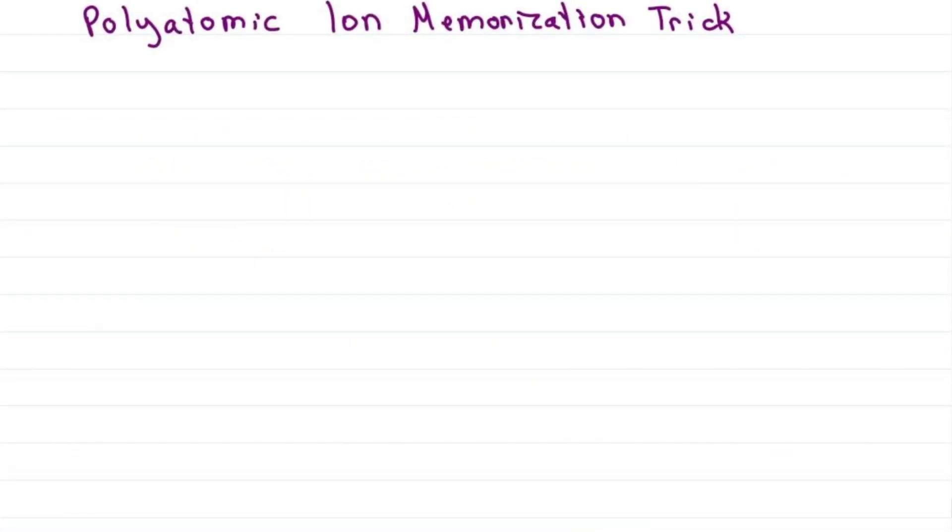Even though you memorize them, some of the polyatomic ions are so similar. For example, SO4 and SO3, both with a minus 2, that they're very easily confused.